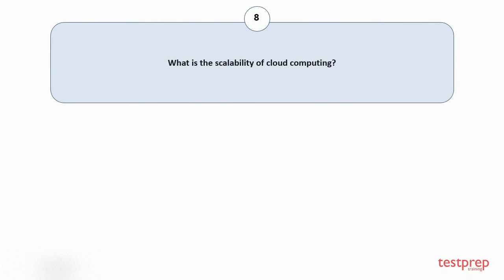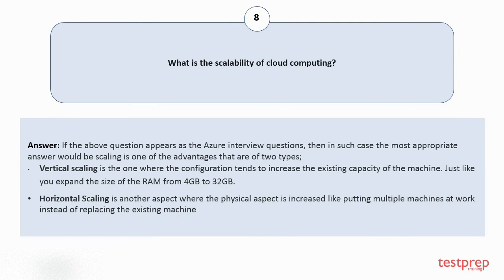Question number 8: What is the scalability of cloud computing? Scaling is one of the advantages that are of two types. First, vertical scaling is where the configuration tends to increase the existing capacity of the machine, just like expanding the size of RAM from 4GB to 32GB. Second, horizontal scaling is where the physical aspect is increased, like putting multiple machines at work instead of replacing the existing machine.